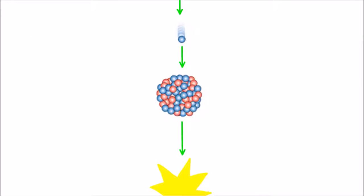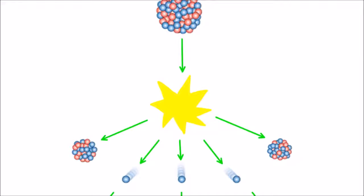The nucleus absorbs the neutron and splits, forming two smaller nuclei. In doing so, it emits two or three neutrons and some gamma rays, and a large amount of energy is released when it splits.